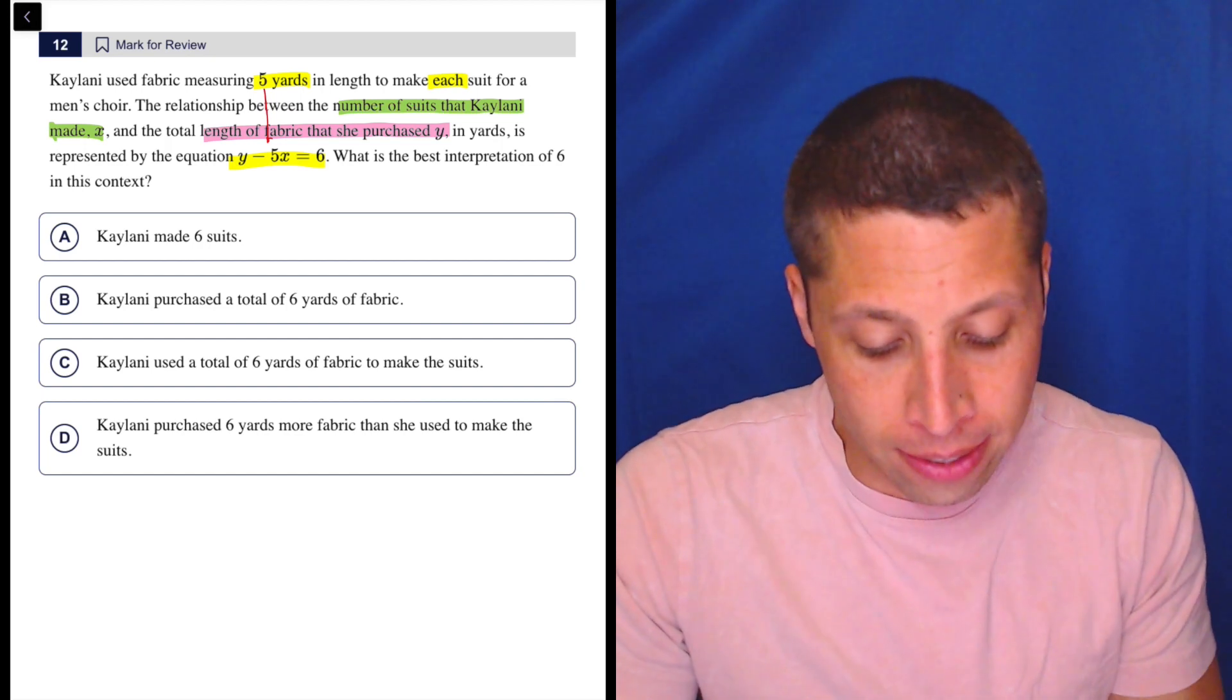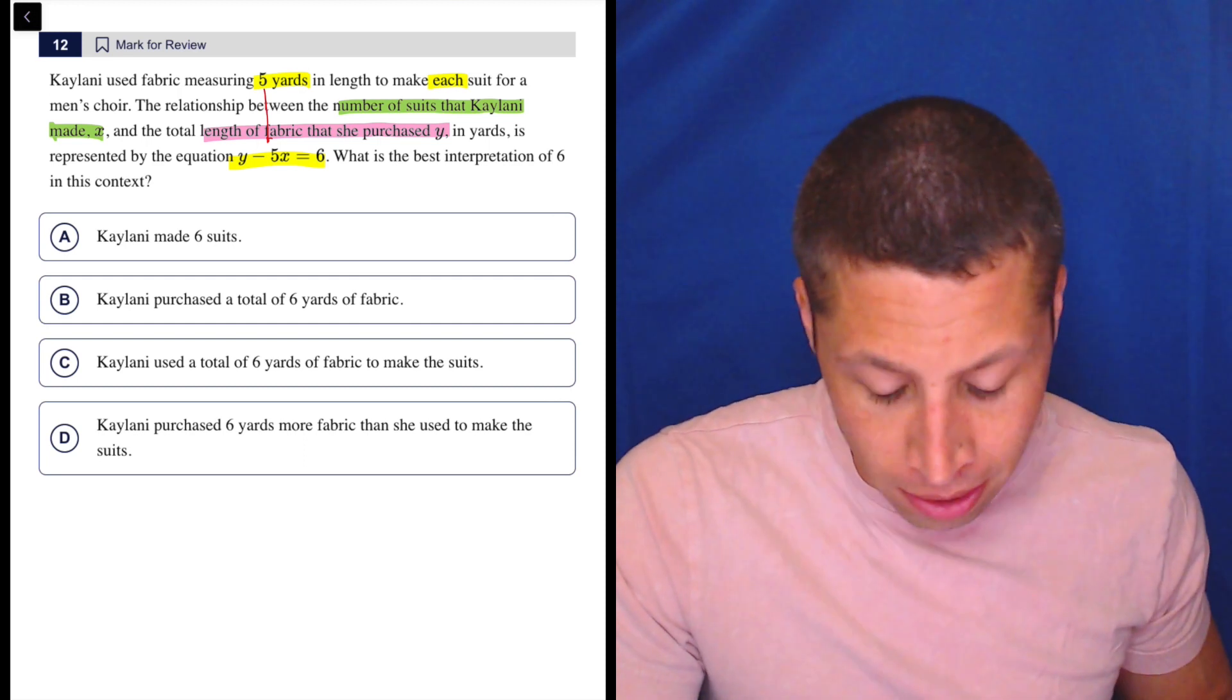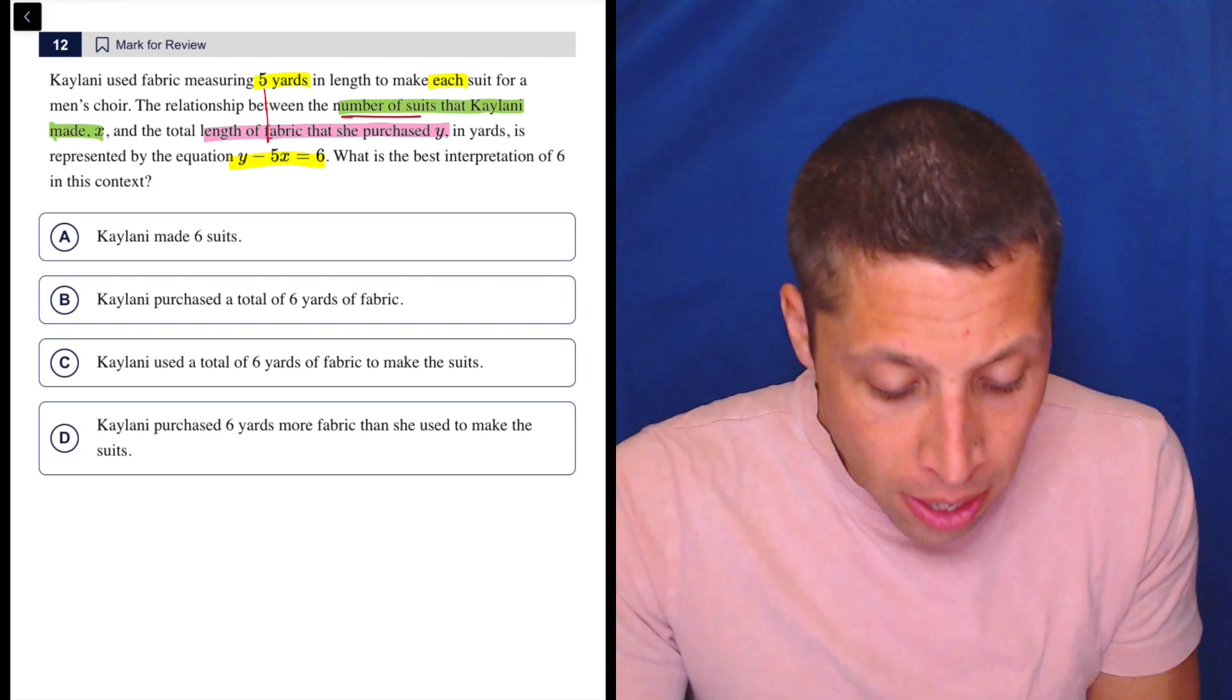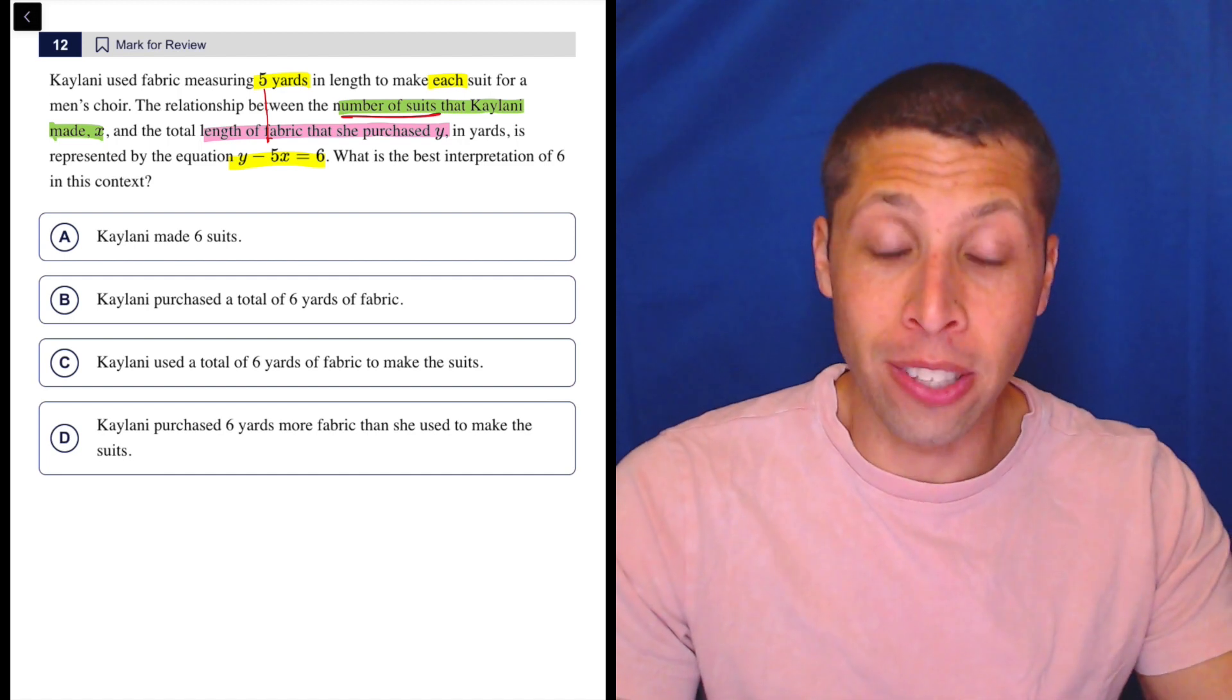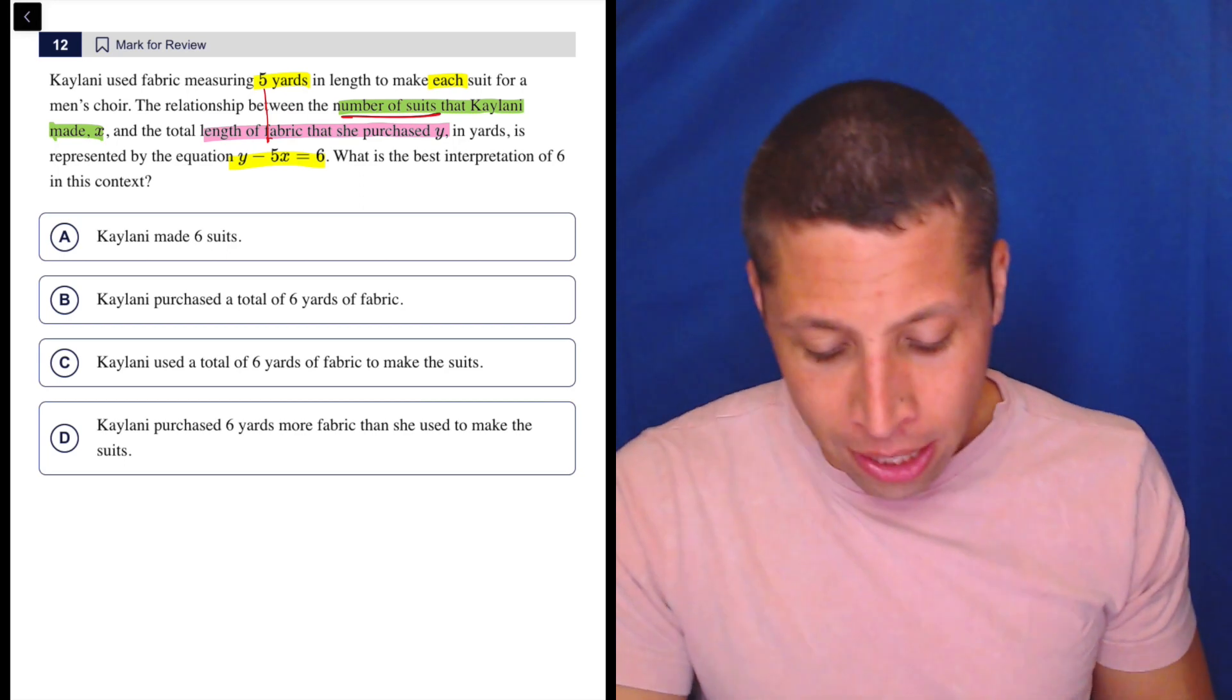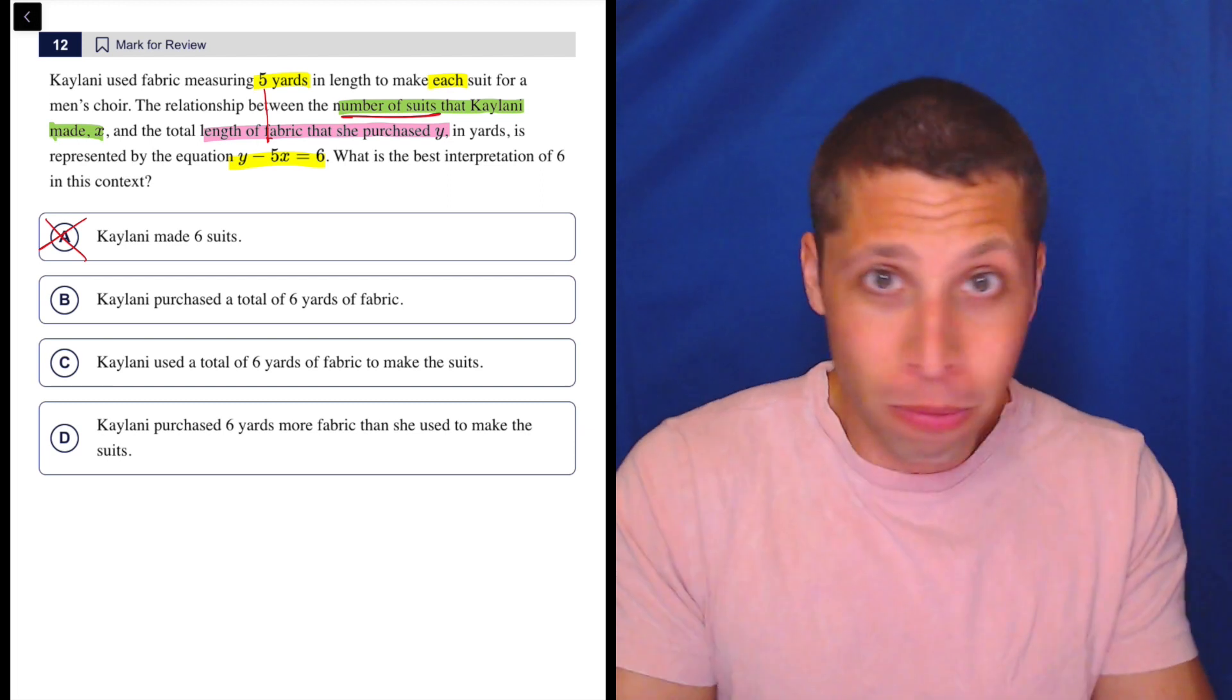What is the best interpretation of 6 in this context? That's the one thing they didn't tell us. If we go to the answer choices, Kalani made six suits. Well no, because the number of suits is x. This happens on a lot of these questions where literally some answers are wrong because they already told us that something else was that. Kalani made six suits? No, she made x suits.